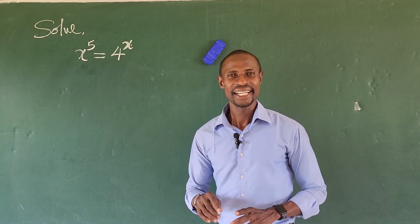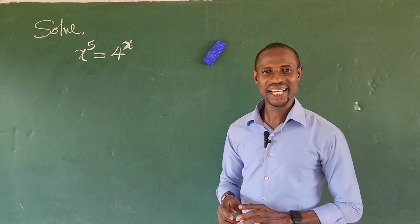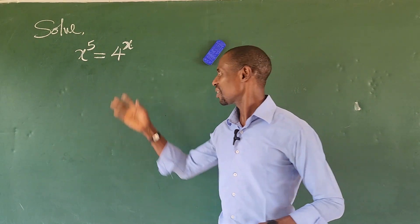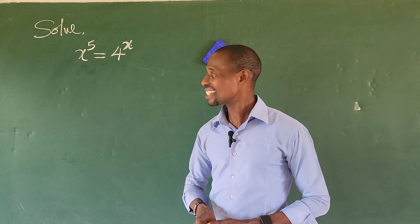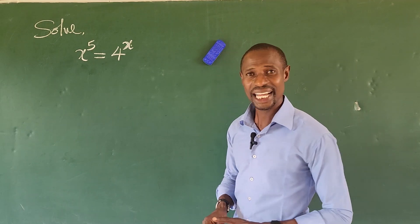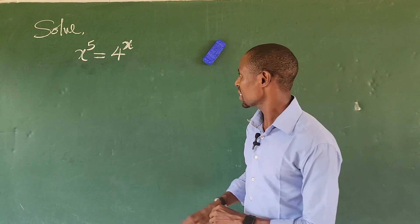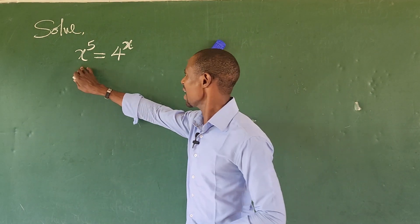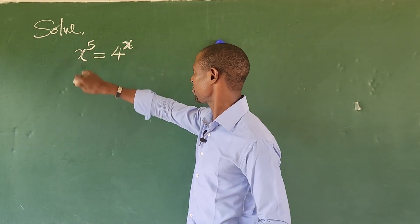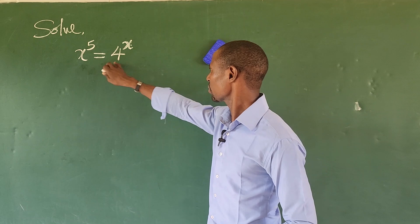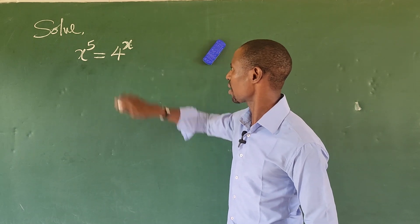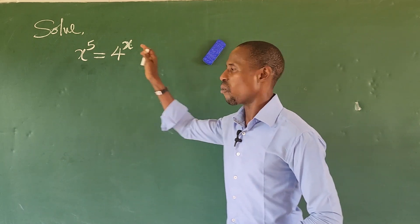Hi everyone, welcome to AlignMouse TV. Today we have a system of exponential equations which says x to the power of 5 equal to 4 to the power of x.